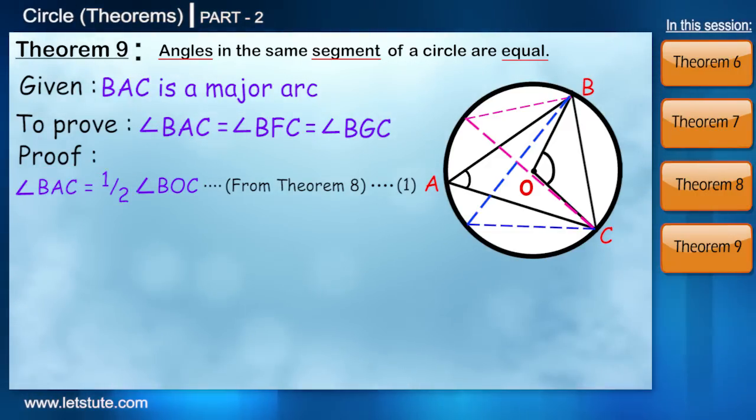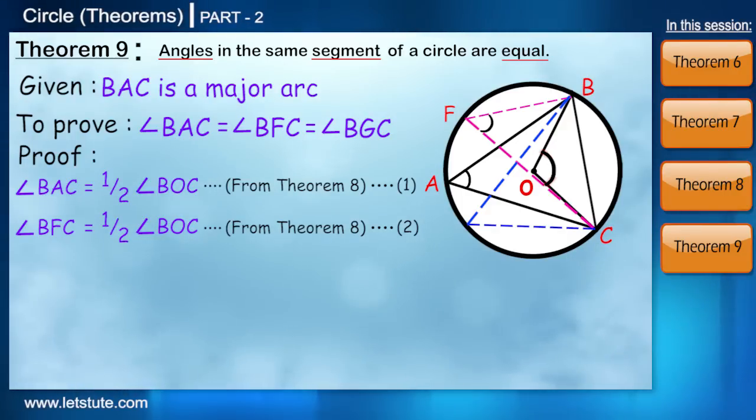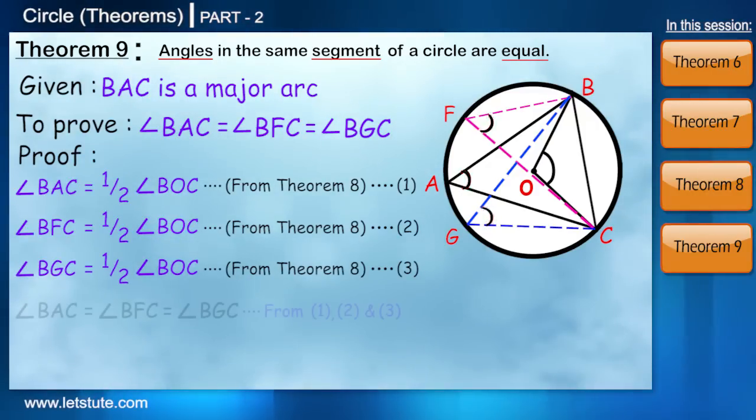Suppose we take a point F other than point A. Again, using our previous theorem, we can say that angle BFC is equal to half of angle BOC. So from this, we can say that any number of angles which are in the same segment are equal.